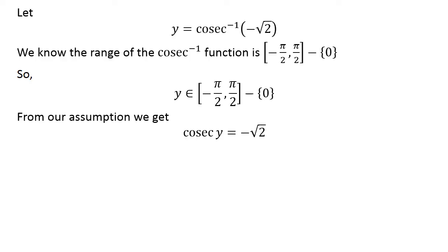Applying properties of inverse functions, we can rewrite y = cosec^(-1)(-√2) as cosec(y) = -√2.